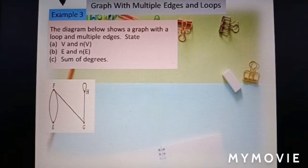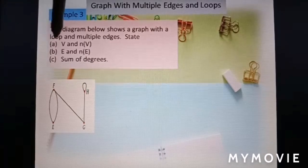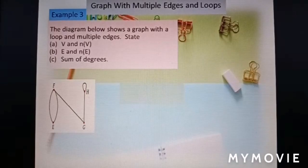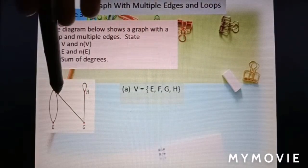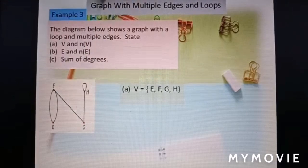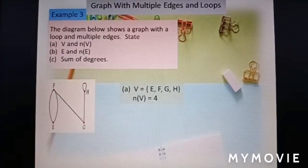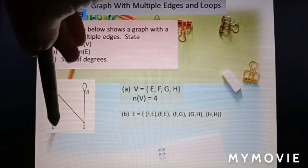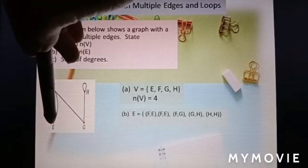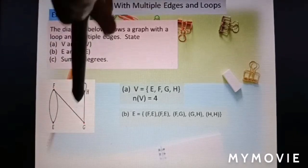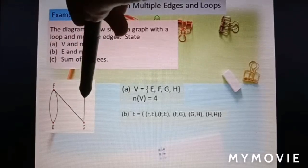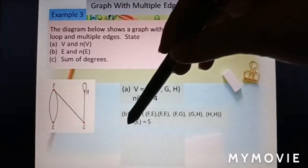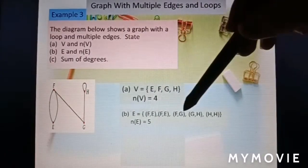Now we look at example 3. The diagram below shows a graph with a loop and multiple edges. State V and number of V. V equal to {E, F, G, H}. Number of V is 4. Now set of edges. We have FE and another FE because it's multiple edges, FG, GH, and HH. This is loop. So number of set E is 5: 1, 2, 3, 4, 5.